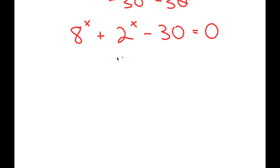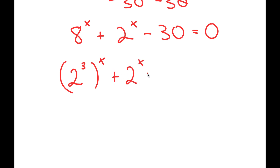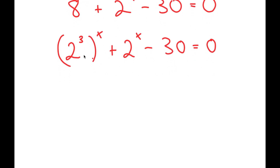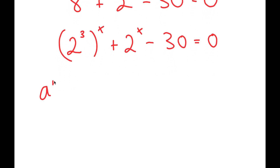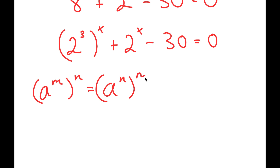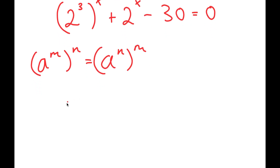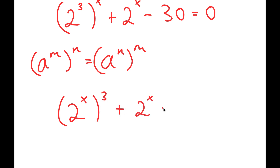Now from here, I'm going to rewrite 8 as 2 to the power of 3. So now I have 2 to the power of 3 to the power of x plus 2 to the power of x minus 30 is equal to 0. And if I have something in the form a to the power of m to the power of n, this is the same thing as a to the power of n to the power of m. So 2 to the power of 3 to the power of x, I can rewrite as 2 to the power of x to the power of 3.